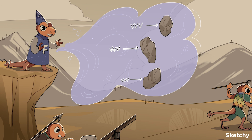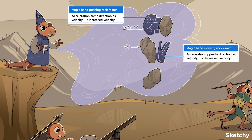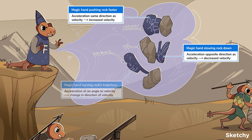But Fred's got three different techniques to aim the rocks where he wants them. Using his magic pushing spell, he can apply an acceleration in the same direction as velocity, speeding up the rock. He can apply an acceleration in the opposite direction as the velocity, slowing down the rock. Or he can apply an acceleration with some other directional component, which will curve the rock's motion and change the direction of the resulting velocity.